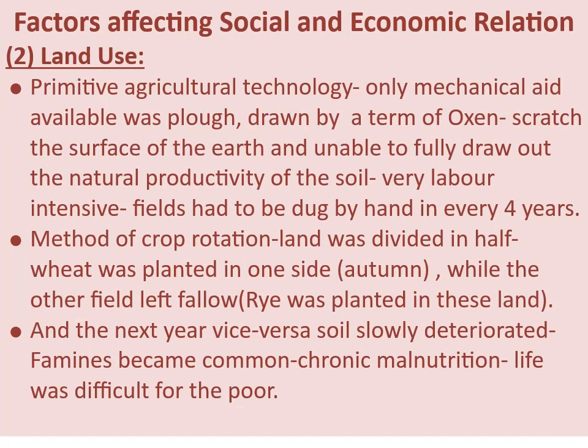The second factor is land use. Primitive agricultural technology meant the only mechanical aid available was a plow drawn by a team of oxen, which only scratched the surface of the earth and was unable to fully draw out the natural productivity of the soil. Fields were very labor intensive and had to be dug by hand. In the two-field crop rotation method, land was divided in half: wheat was planted on one side while the other was left fallow, then alternated the next year. Soil slowly deteriorated, mines became common, and chronic malnutrition made life difficult for the poor.